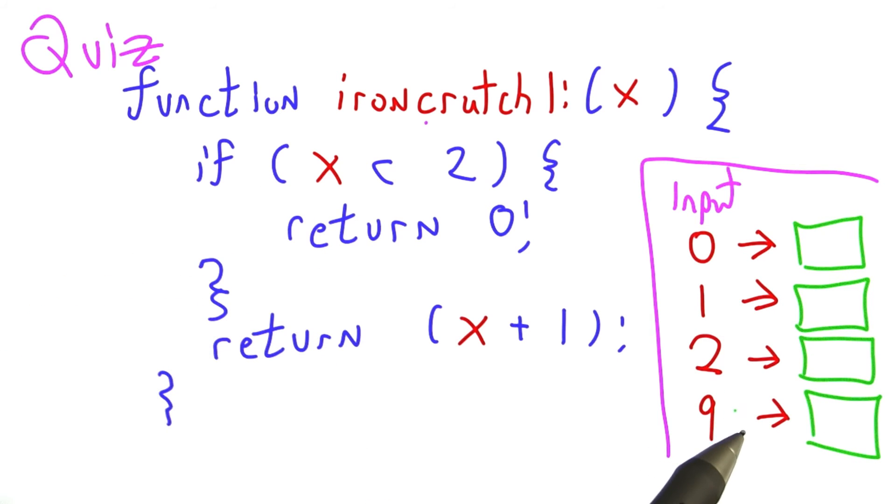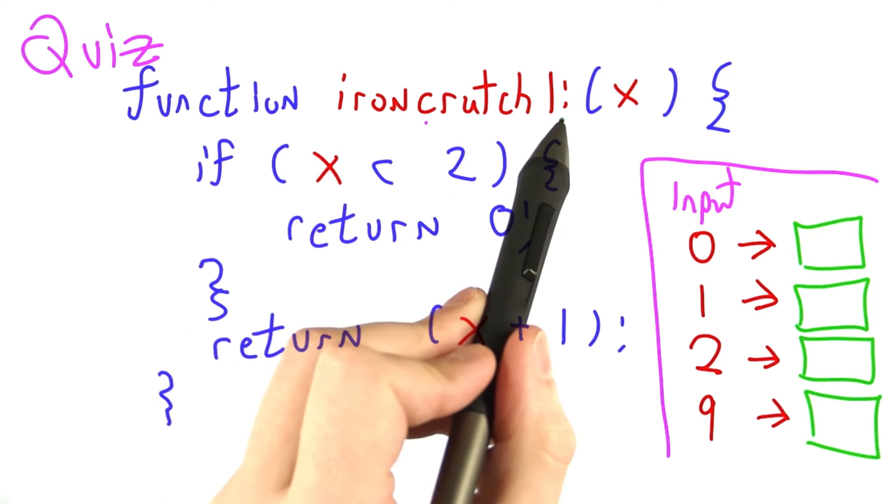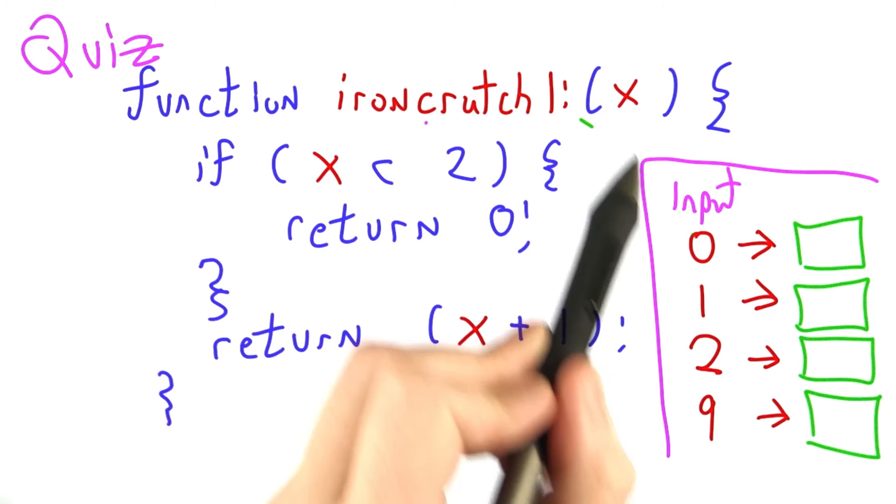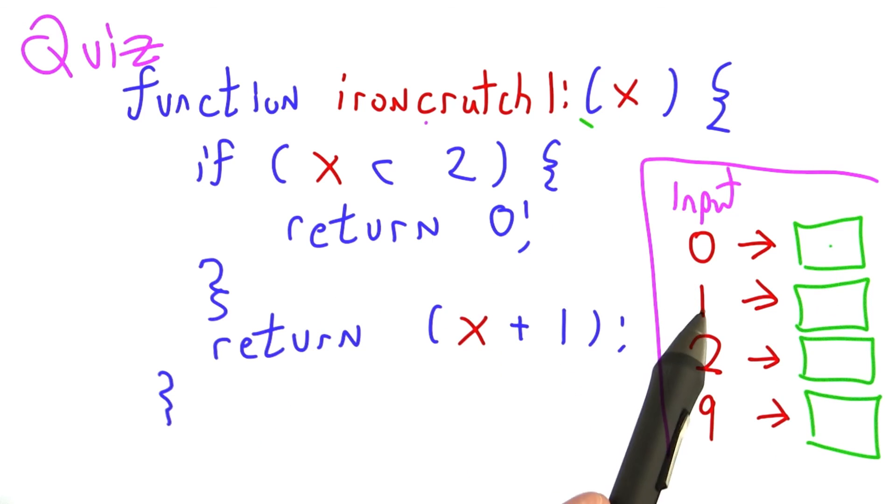So I'm going to have you tell me what this function evaluates to based on a few different inputs. In this fill in the blank quiz, for each one of these inputs, imagine we're calling Ironcrutch Lee on 0. So this 0 is bound to the value of x. What would the output be? Similarly for 1, 2, and 9.